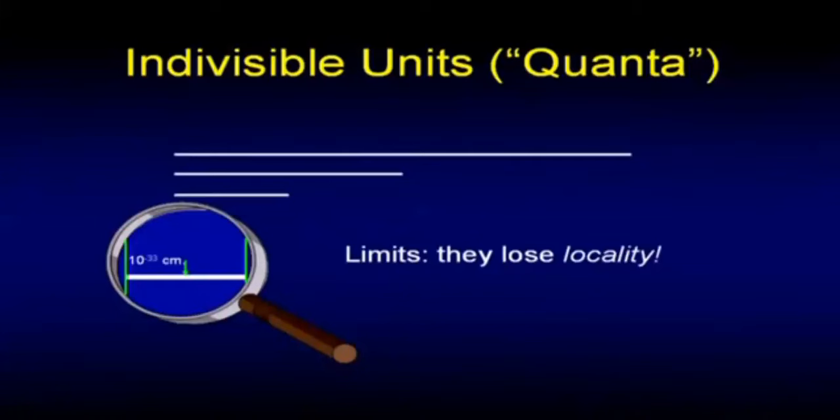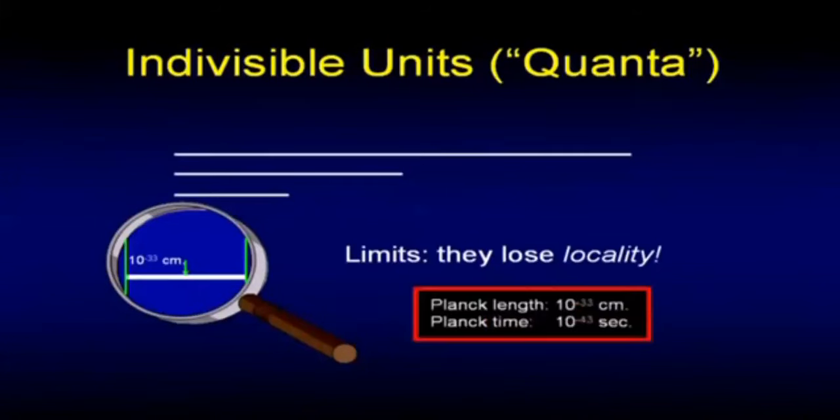It turns out I've described it here in terms of length, but it's also true of time. Time is made up of units. 10 to the minus 43 seconds is the unit of time. There is no unit of time smaller than that. It's very small, but there's nothing smaller than that. There's units of length, mass, energy, and time.